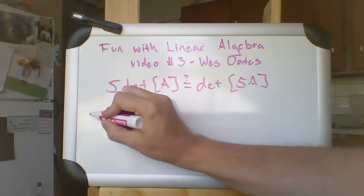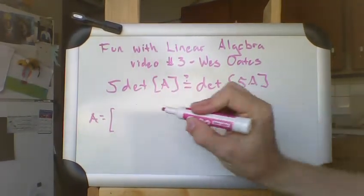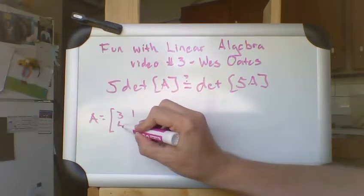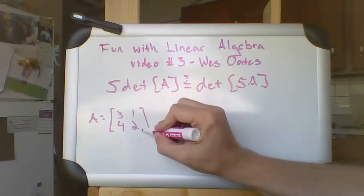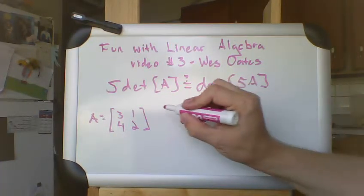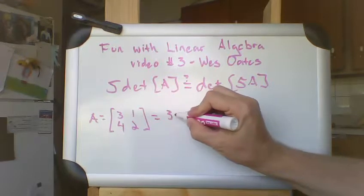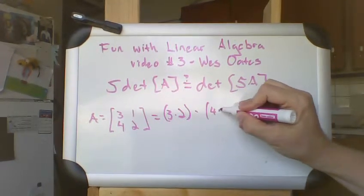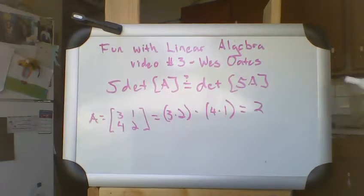We're going to say that the matrix today is just a two-by-two matrix: 3, 1, 4, 2. And we're going to find the determinant of that matrix, which of course would be 3 times 2 minus 4 times 1, and you can probably do it in your head, it's just equal to 2.